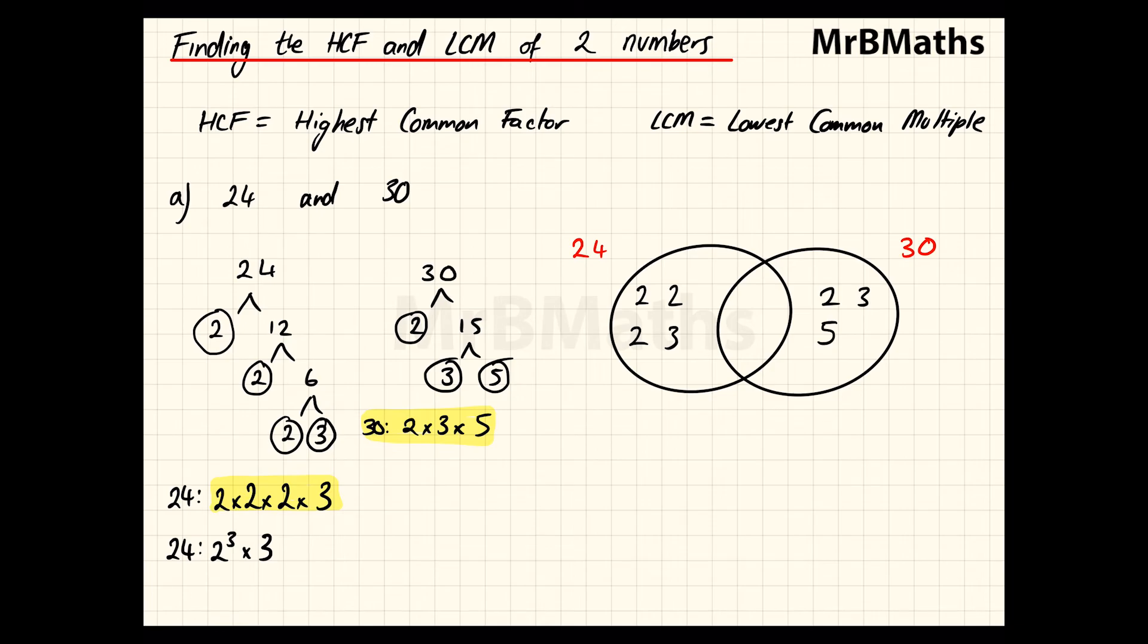Now I'll cross out each matching pair from each side. I have a 2 here and a 2 there, so I'll cross them out and write 2 in the center because it's shared. I'll do the same for the other numbers. The only other match is 3, so I'll cross both 3s and write 3 in the center.